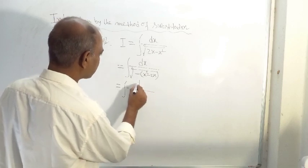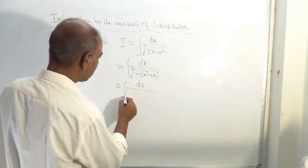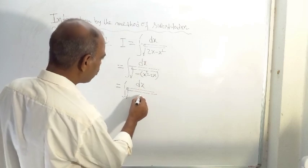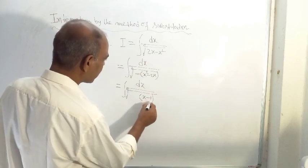And here x square minus 2x is there, so we can write this way.